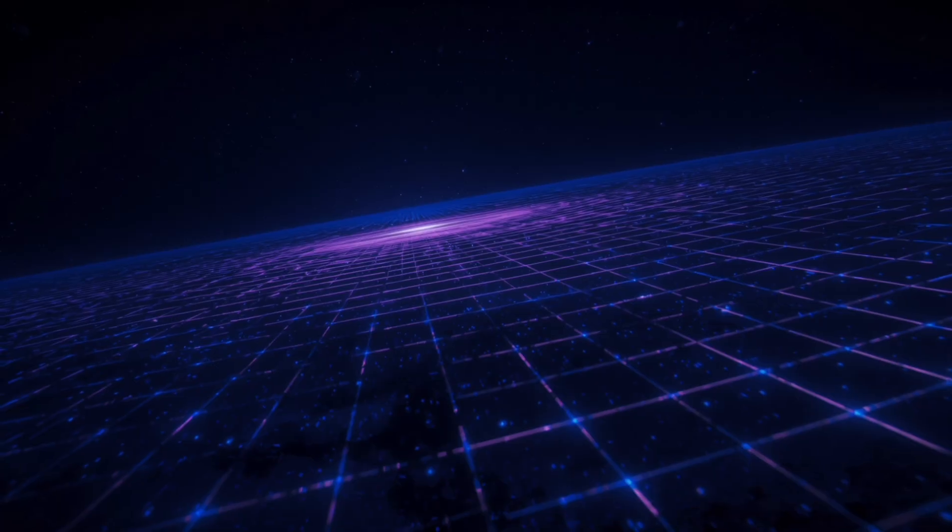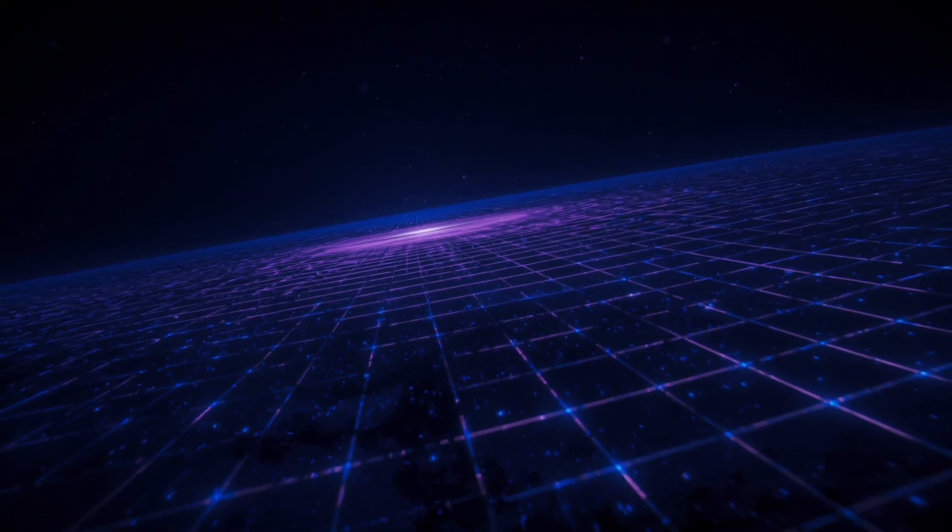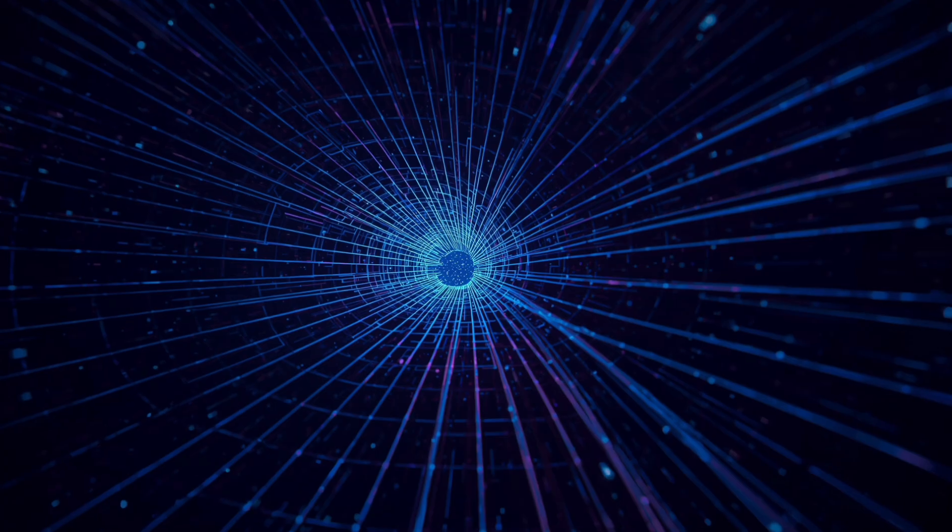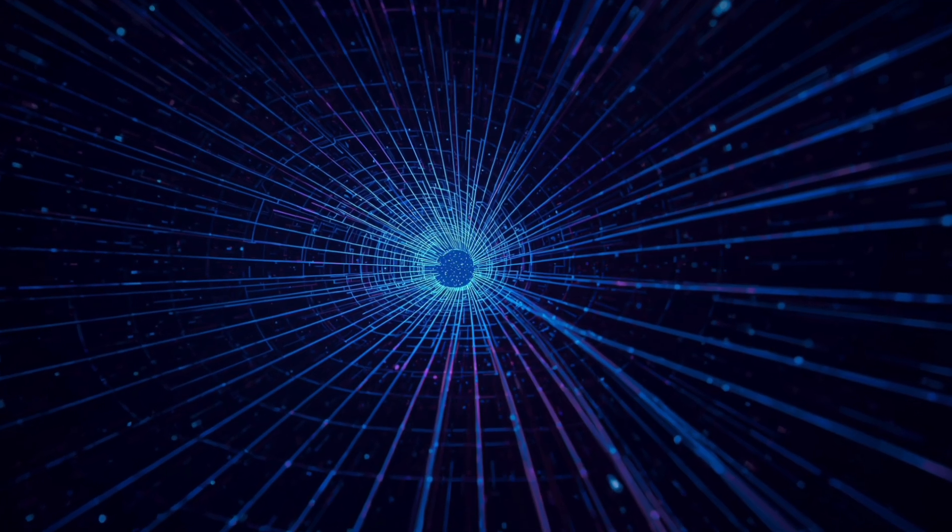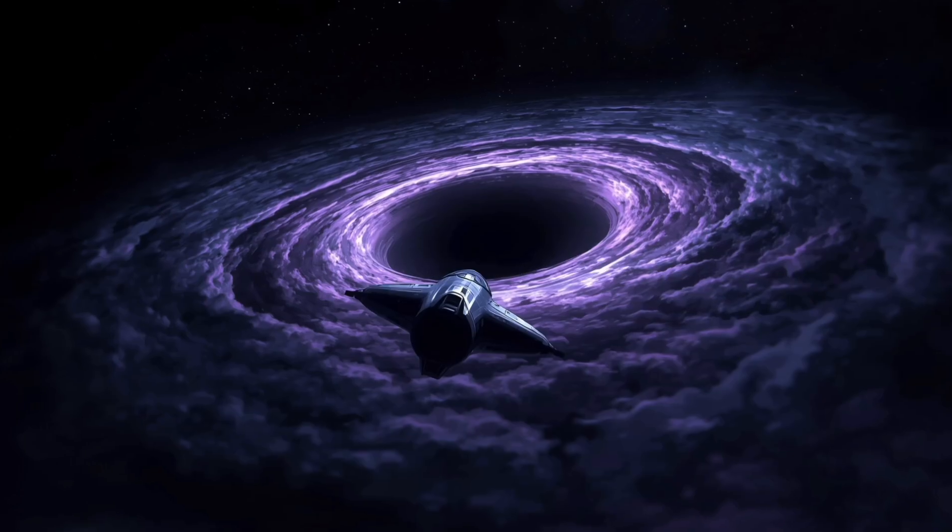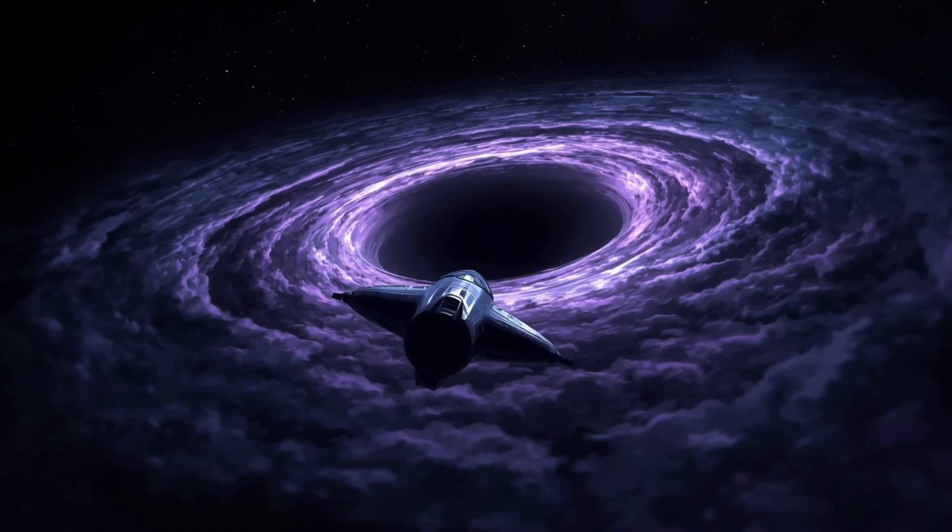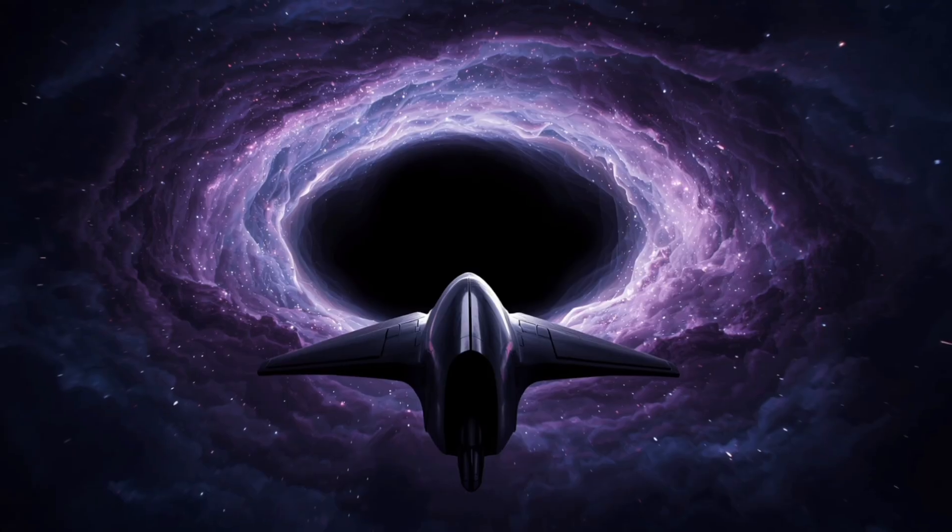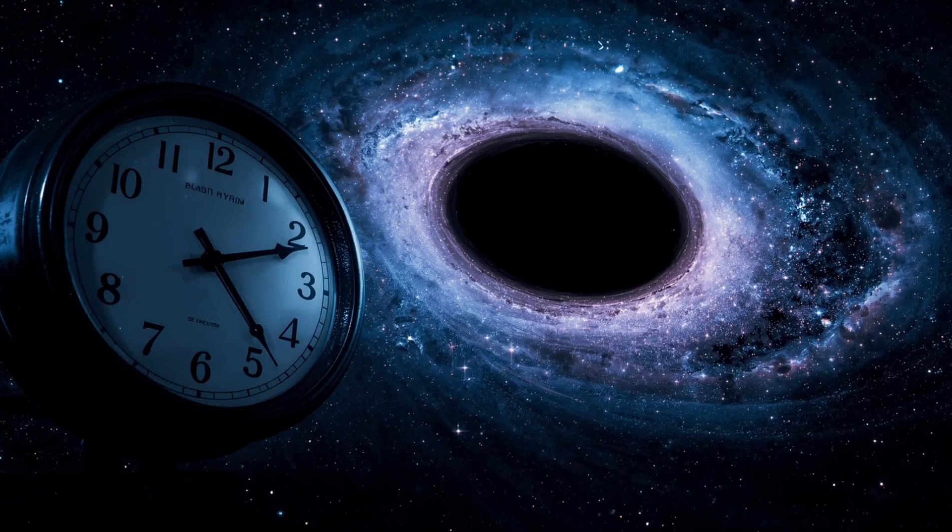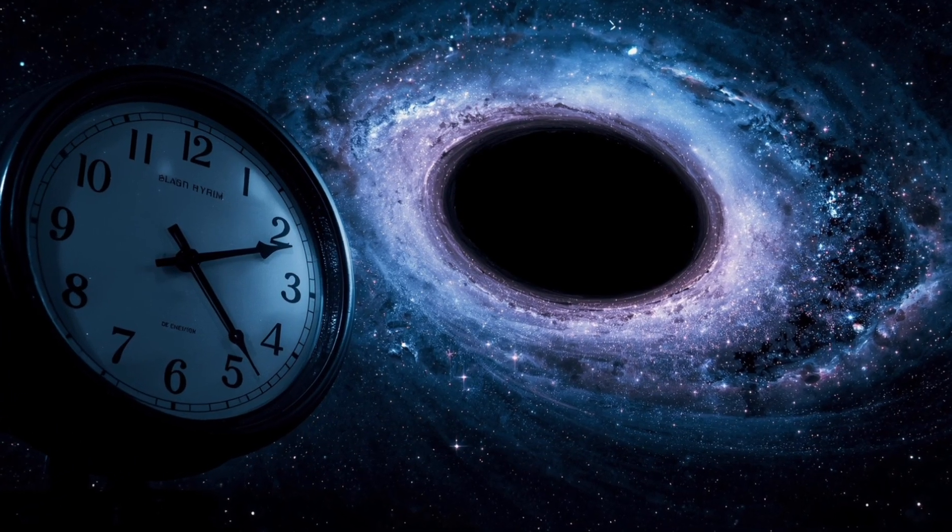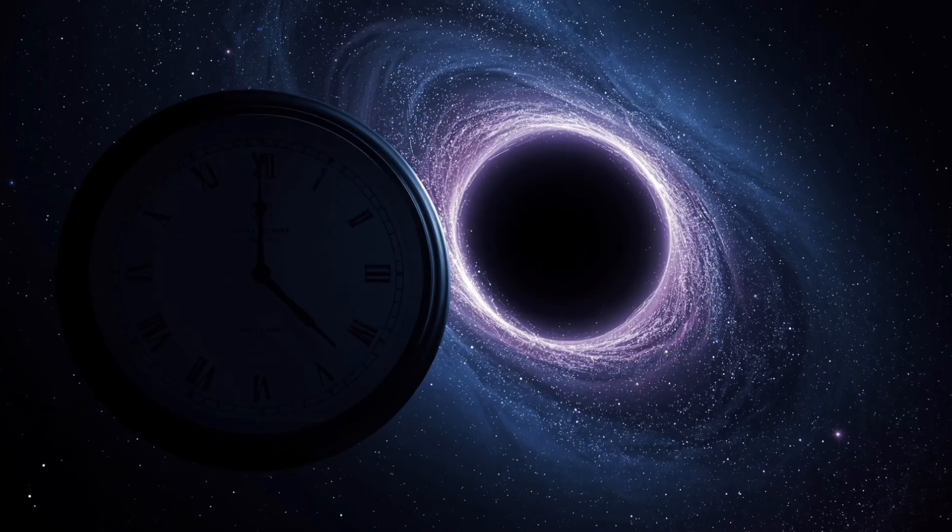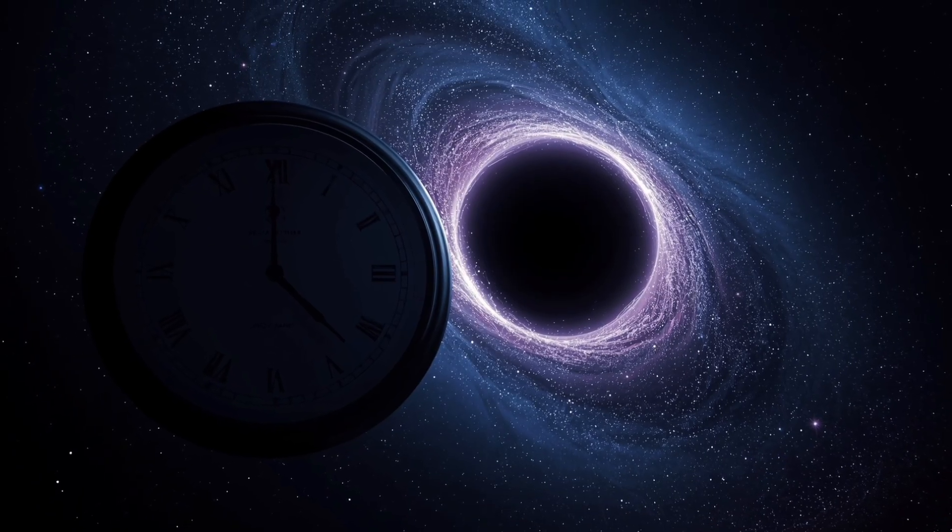The singularity of Ton 618 is a place where density and gravity reach infinite theoretical values, where the laws of nature, as currently understood, break down entirely. To approach the event horizon of Ton 618 would mean entering a region of space where time dilation becomes extreme. A clock near the black hole would tick slower compared to one far away. The closer one moves to the event horizon, the slower time passes relative to the outside universe.